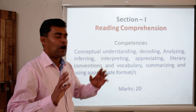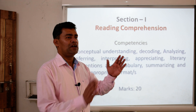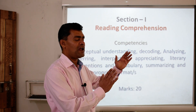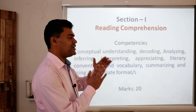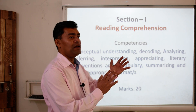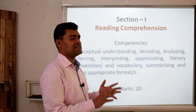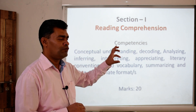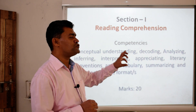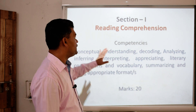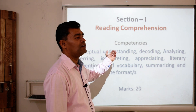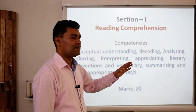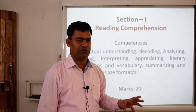Now, out of this 80 marks, it is divided into two sections: Section A and Section B. Section A is completely objective — the pattern of assessment is completely objective. You will be given four options and you have to choose the most correct one. Out of Section 1 and Section 2, the remaining 40 is more descriptive.